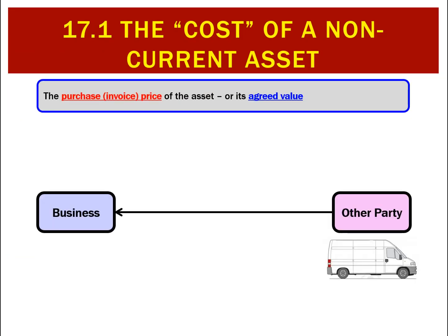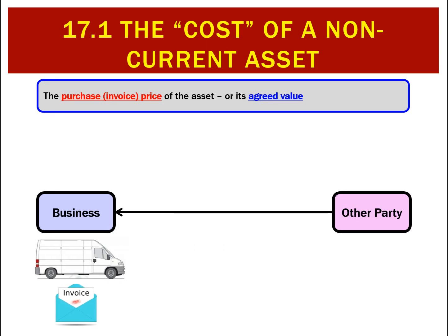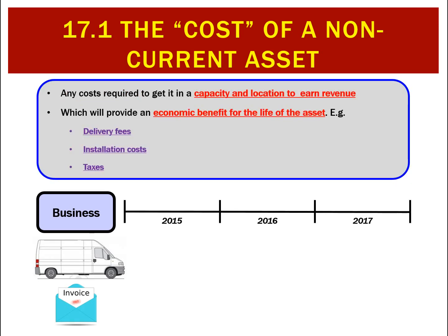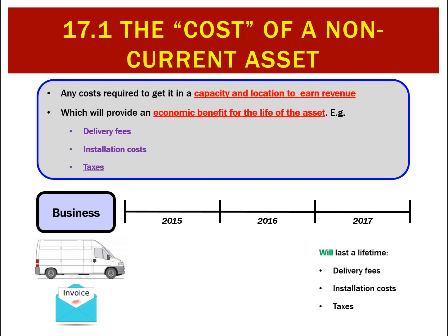To reiterate: if we buy a delivery van from another party on credit, they give us an invoice — that's the purchase price, which is straightforward to calculate. Then we add any costs required to get the car in a capacity and location to earn revenue, but they have to last or provide an economic benefit for the life of the asset. For instance, getting it delivered for a one-off fee, having it installed, or paying stamp duty — these are one-off expenses that last for the life of the asset.